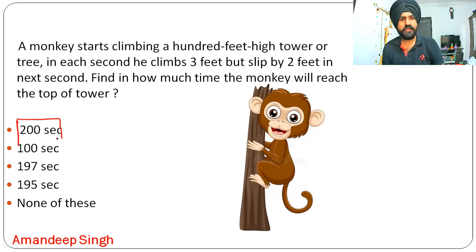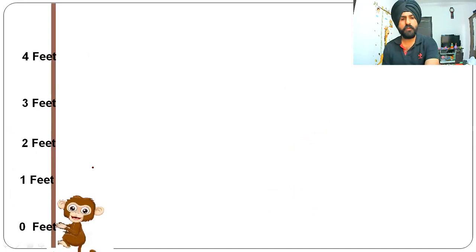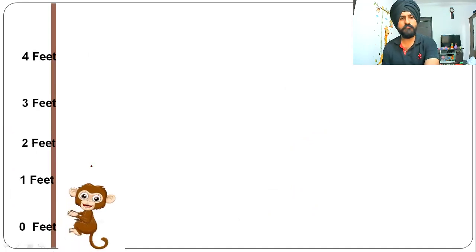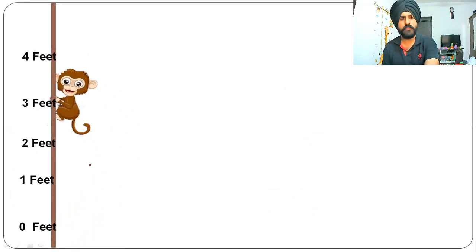If your answer is 200 seconds, then the answer is wrong. Why? Let's look at it. Here's a monkey at ground level at zero feet. In the first second he will have a jump of three feet, so he will reach the three feet mark. In the next second the monkey will fall by two feet.